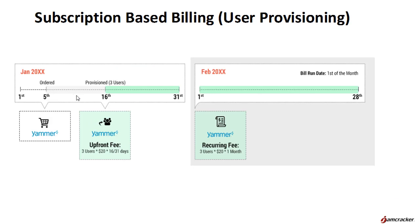This is a variation of the subscription model that was billed based on the number of licenses ordered by the company. In this model, an enterprise is billed for the actual number of licenses assigned to different users. Let us assume that the Yammer service is charged at $20 per user. The organization will be billed based on the total number of licenses assigned to users, which is three users in this case, for the actual number of days used.